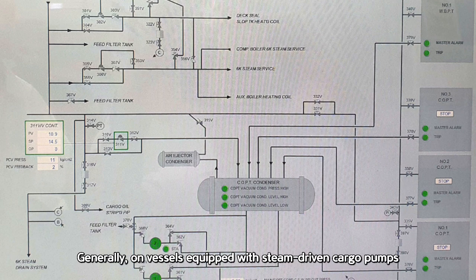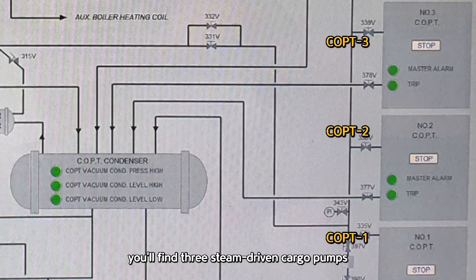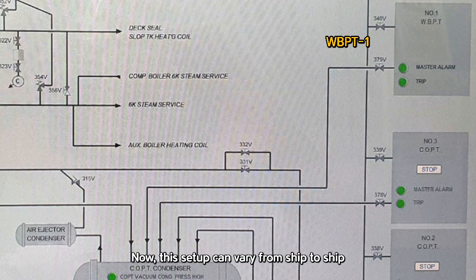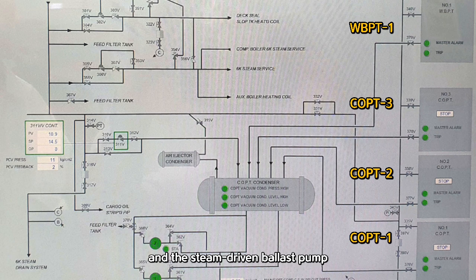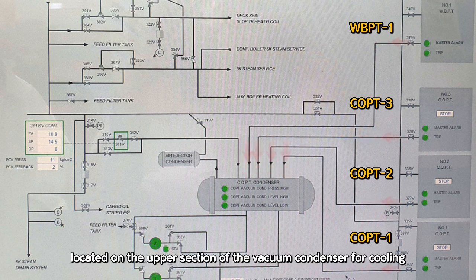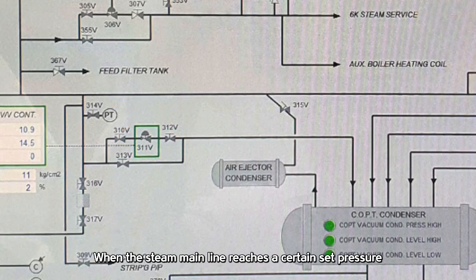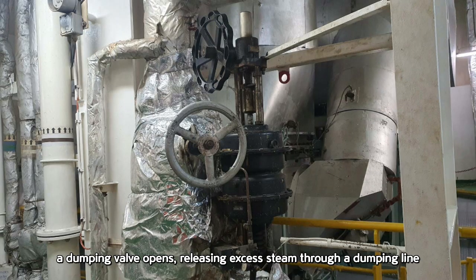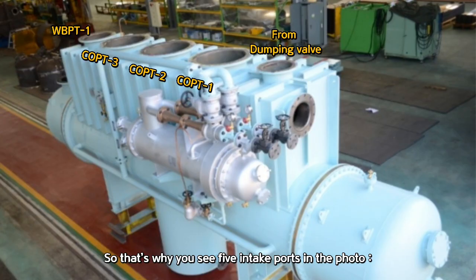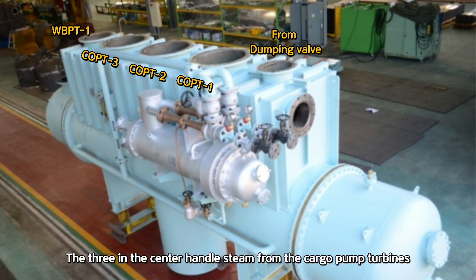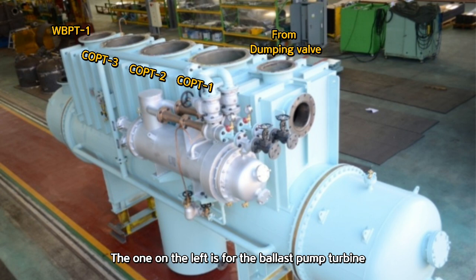Generally, on vessels equipped with steam-driven cargo pumps, you'll find three steam-driven cargo pumps and two ballast pumps. Now, this setup can vary from ship to ship, but typically, one of the ballast pumps is electric motor-driven, while the other is steam-driven. So the three cargo pump turbines and the steam-driven ballast pump all discharge high-pressure, high-velocity steam. This steam is directed into four of the intake ports, located on the upper section of the vacuum condenser, for cooling. As for the fifth hole, it serves a different purpose. When the steam main line reaches a certain set pressure, a dumping valve opens, releasing excess steam through a dumping line. That steam is also handled by the condenser through the fifth intake port. So that's why you see five intake ports in the photo.